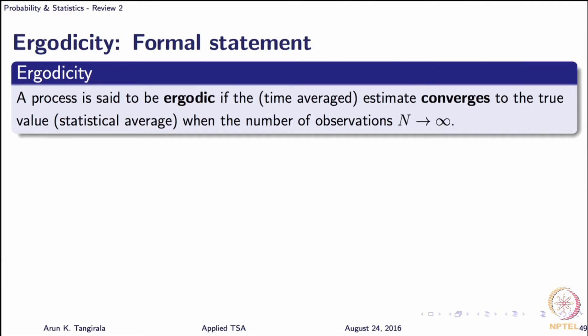The process is said to be ergodic if the time averaged estimates, whatever you are averaging in time, that converges to the true average. What do we mean by true average? The ensemble. And of course, it is implicitly understood that the process is stationary, otherwise it does not make any sense. So ergodicity is spoken of only for stationary processes. This time average should coincide with the true average as the number of observations you take run to infinity.